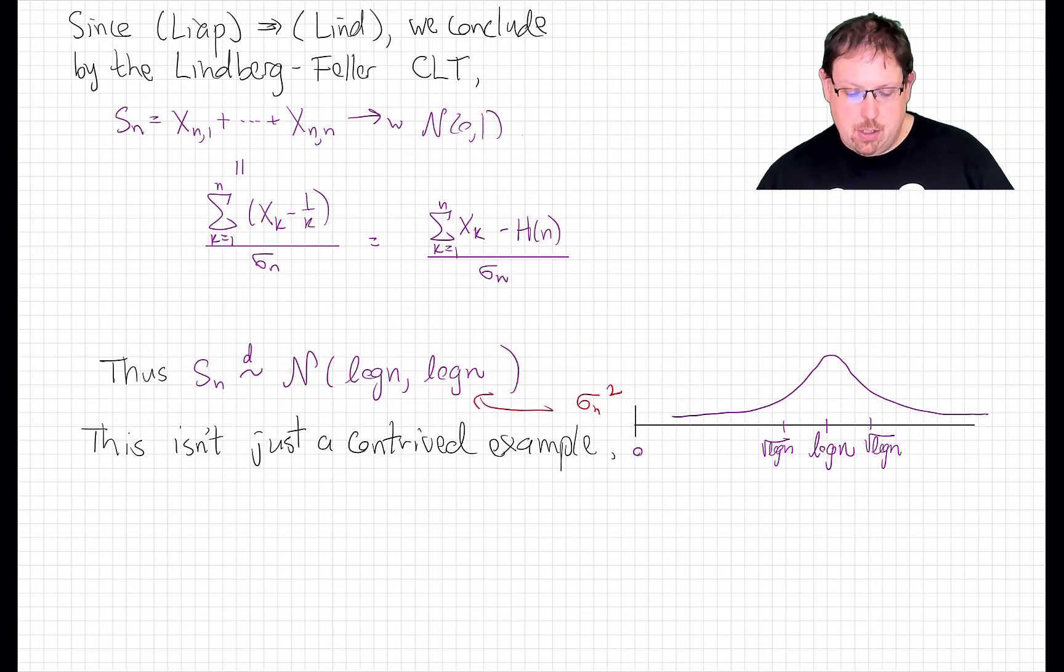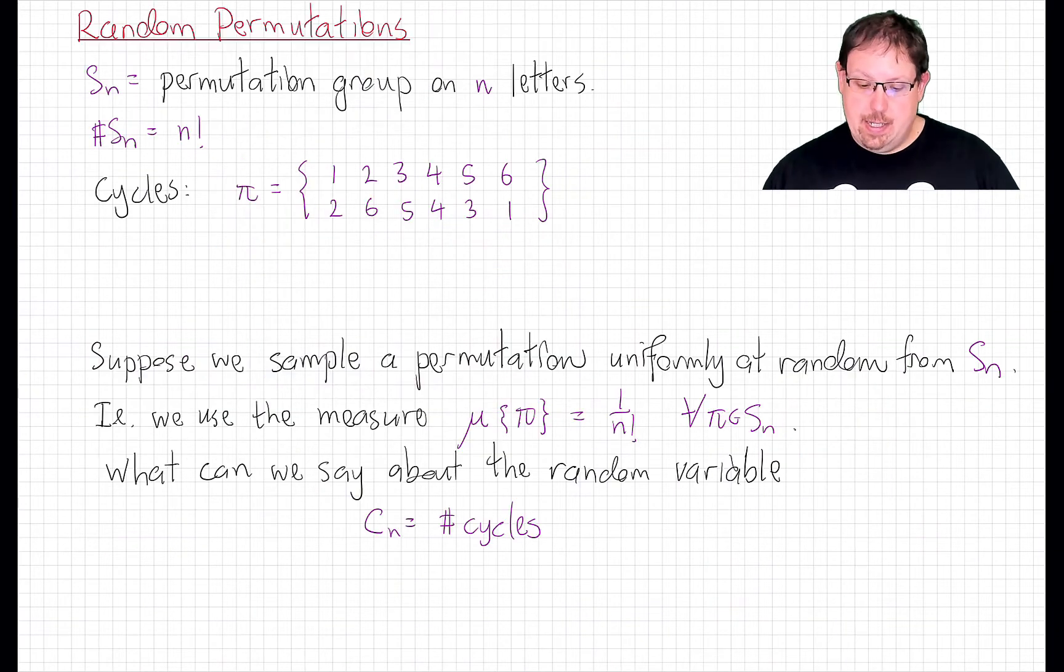So that's interesting, but this is not just a contrived example. It turns out that this particular asymptotic normal distribution tells us about cycles of random permutations. Let S_n denote the permutation group on n letters. That is, it's the set of all bijections of the set 1 through n. There are n factorial such bijections.